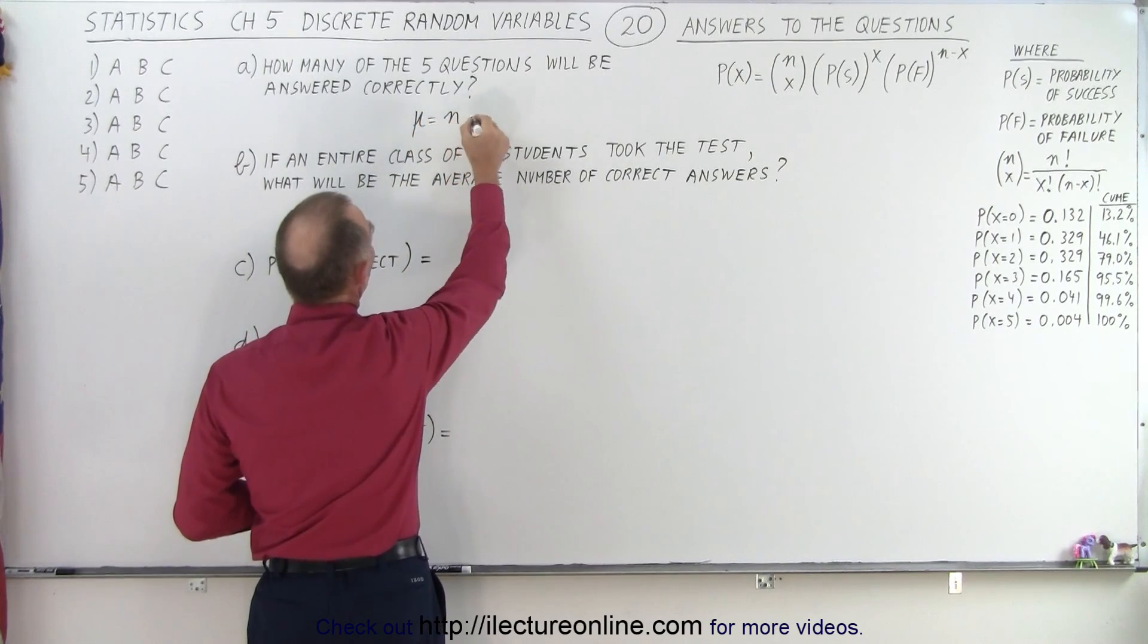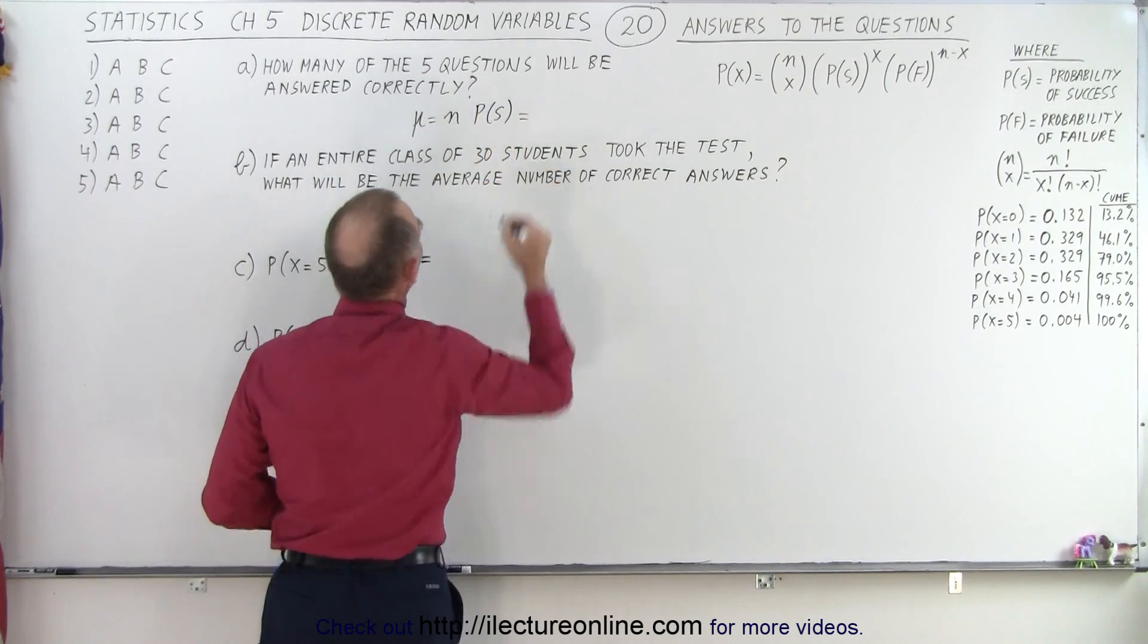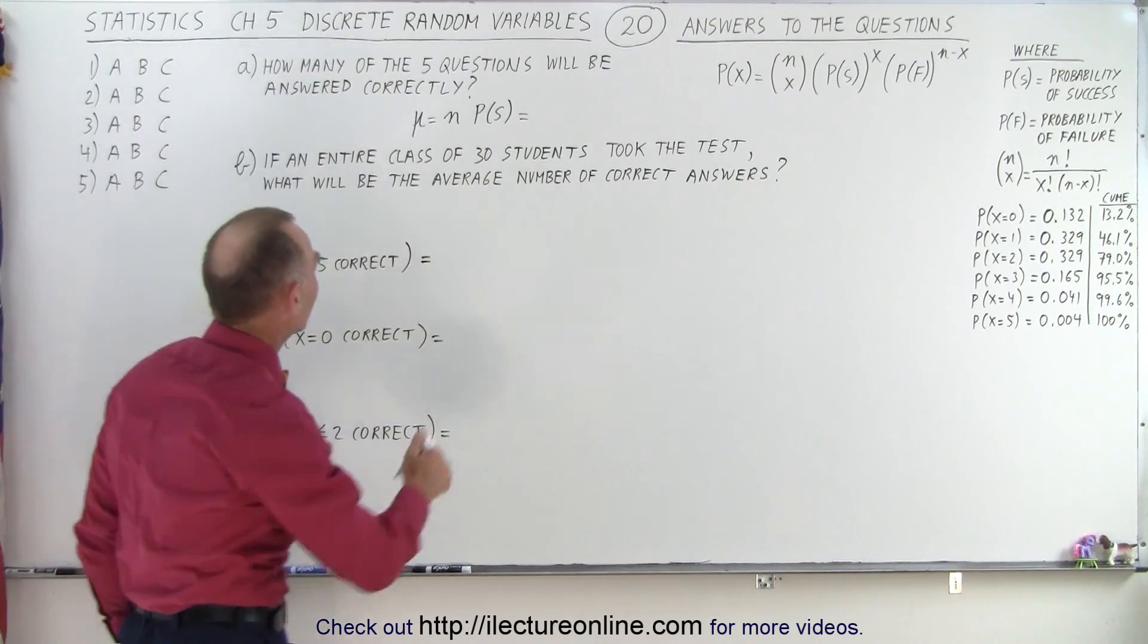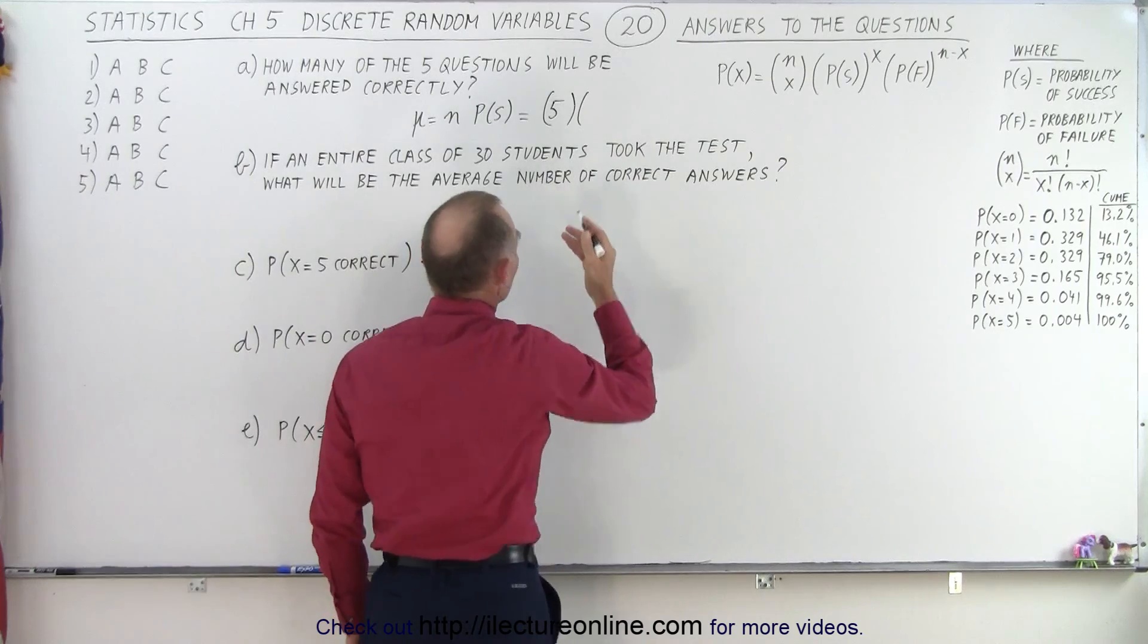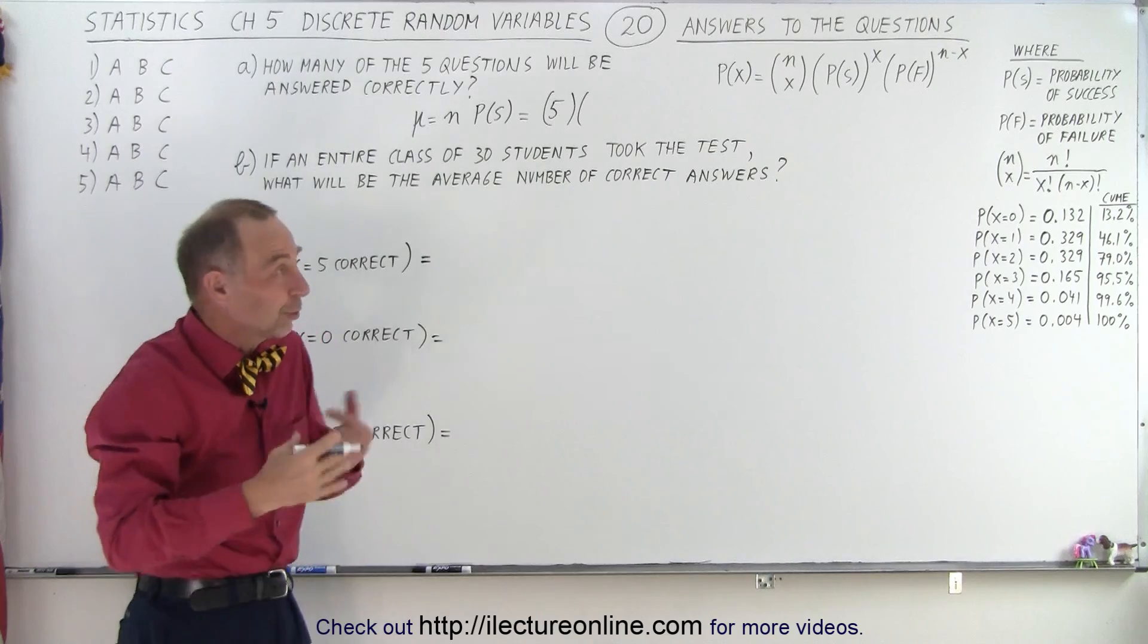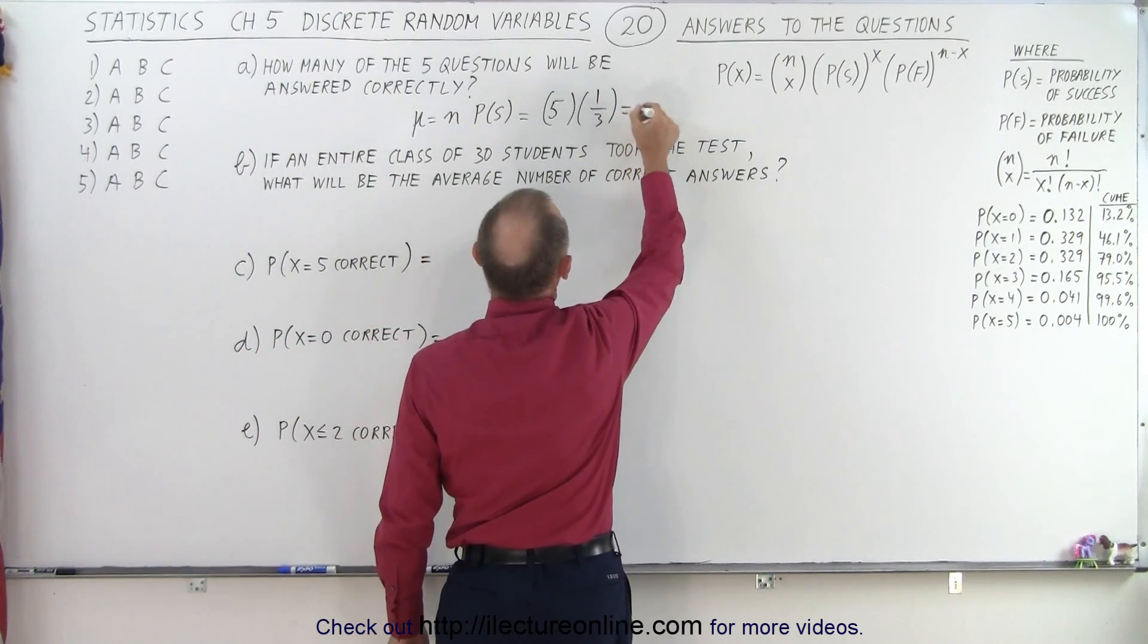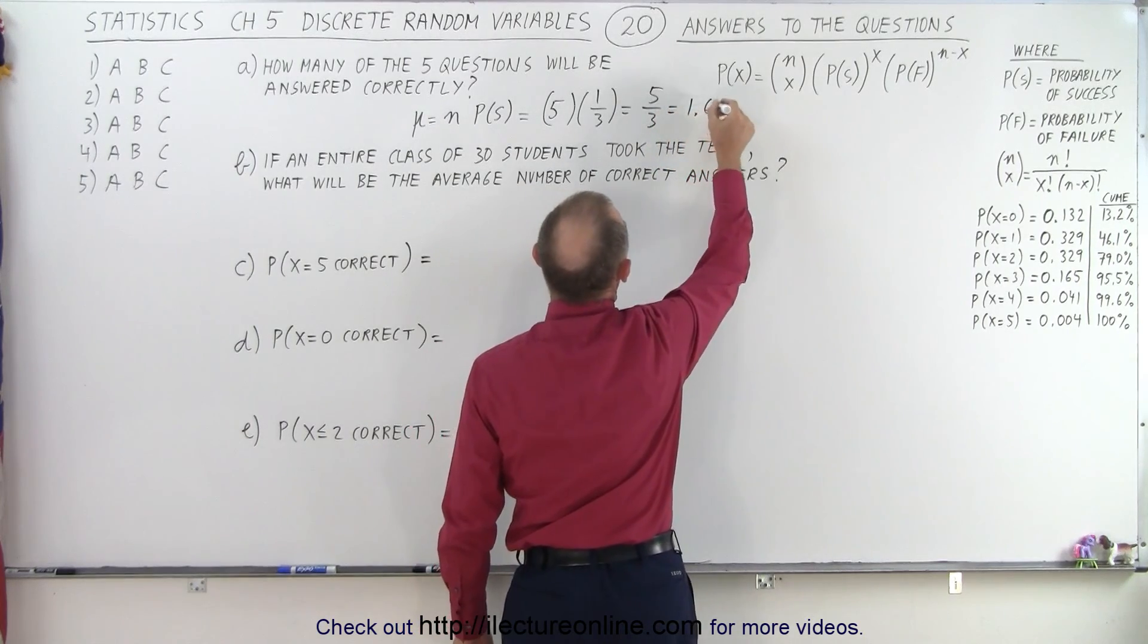Well that is equal to the number of tries times the probability of success. Now the number of tries in this case, of course there's five different questions, that would be five. And the probability of success, now notice that there's three questions, one of them is right, two of them are wrong. So the probability of getting the right question in each case would be 1 over 3. So that means we get 5 over 3 or roughly 1.67.